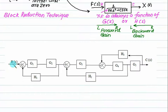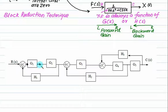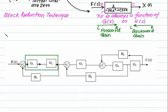R(S) is the input and C(S) is the output. Looking at block G1: this is the input for G1 and this is the output of G1. The output of G1 is the input of G2, and the output of G2 is here. The input of G1 is a separate entity, but the output of G1 is the same as the input of G2, and there is no branch between these two.